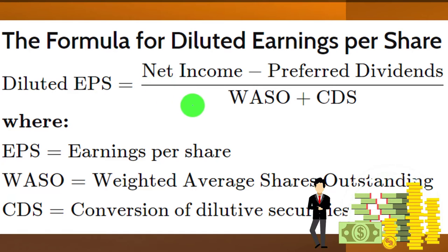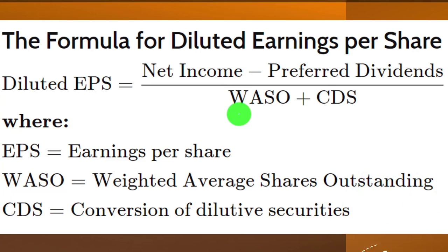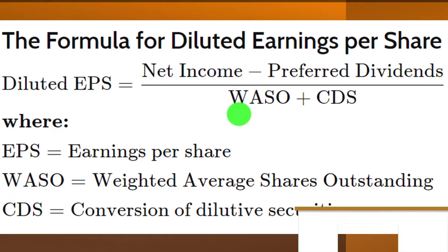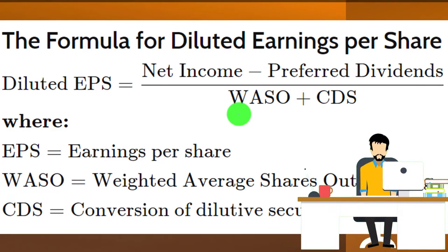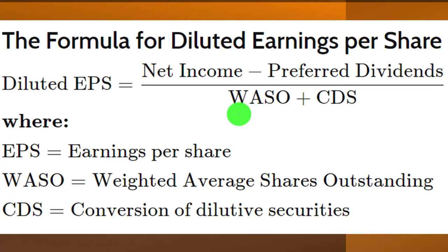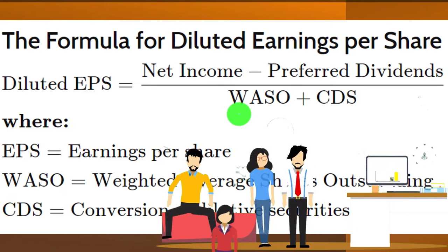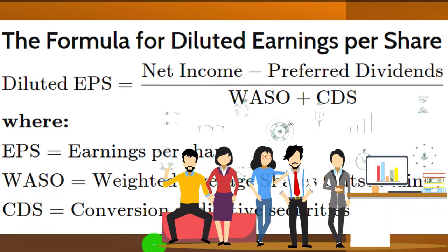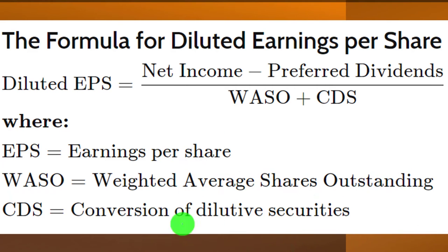The number of shares outstanding is a balance sheet item as of a point in time. Rather than using just the end-of-year figure, you might use a weighted average shares outstanding to approximate shares through the year — especially useful if there were changes to shares outstanding. The CDS is the conversion of diluted securities: that diluting factor which accounts for securities that, if exercised, would increase the number of shares, increasing the denominator.